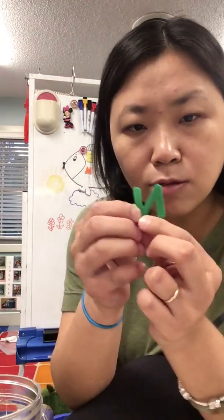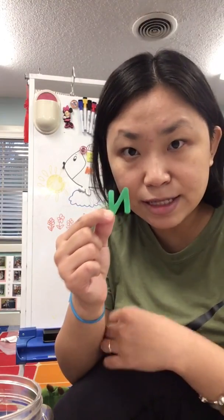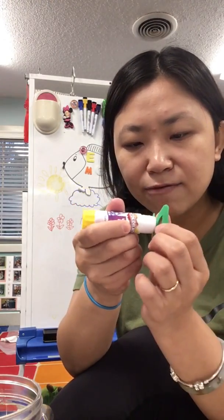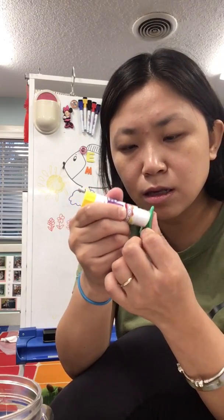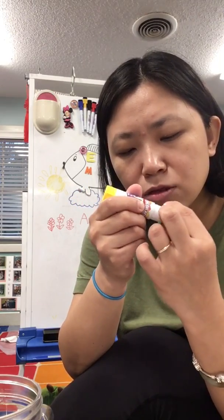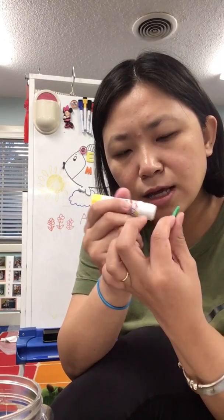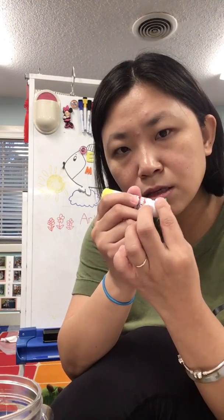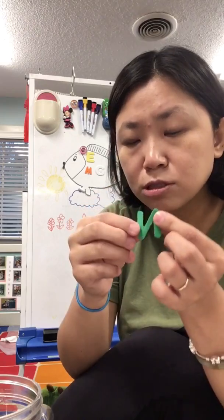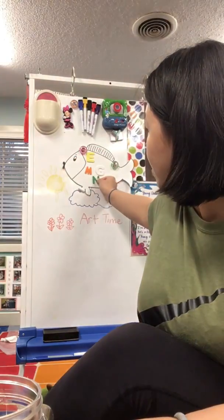Now I'm going to find a letter that needs glue. What letter is this? You are right, this is letter N! Let's put some glue on the back of letter N — a lot of glue. Can you think of something that starts with letter N? What about nose — nose starts with letter N! So let's put letter N on the fish.